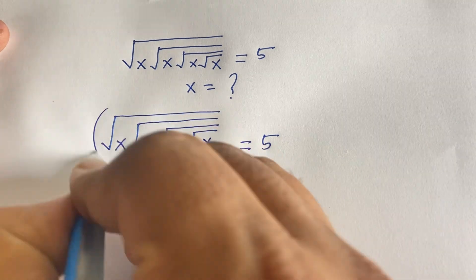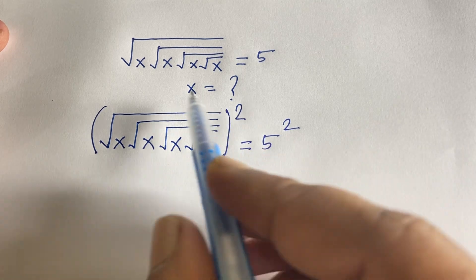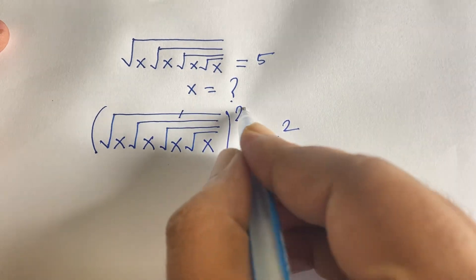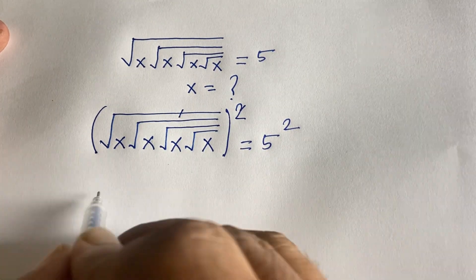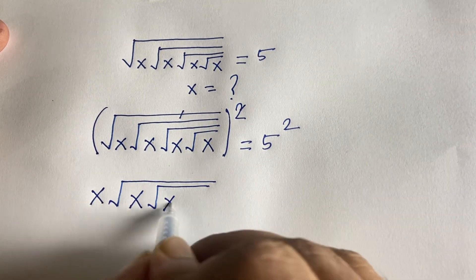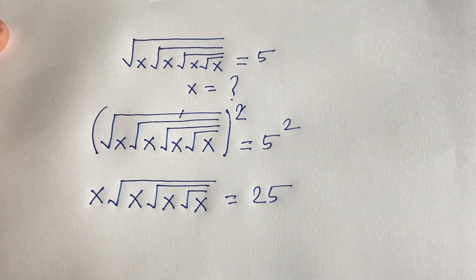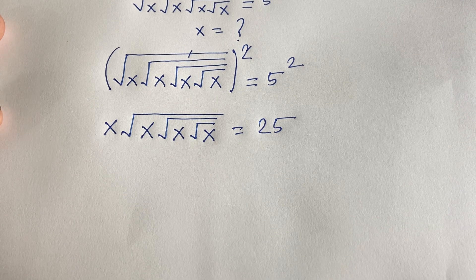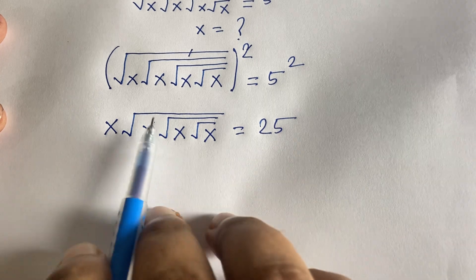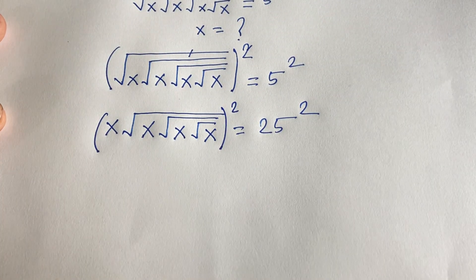I will square both sides to eliminate the outermost square root. The square root cancels, and we get: x times square root of x times square root of square root of x times square root of square root of square root of x equals 25. Then I square both sides again to remove the next square root.